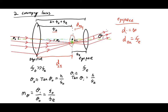The angular magnification of the telescope is the ratio of the angular size of the image to the angular size of the object. The angular size of the object equals the intermediate image height divided by the objective focal length. The angular size seen through the eyepiece equals that same image height divided by the eyepiece focal length. So angular magnification equals the ratio of the two focal lengths: f_objective divided by f_eyepiece.